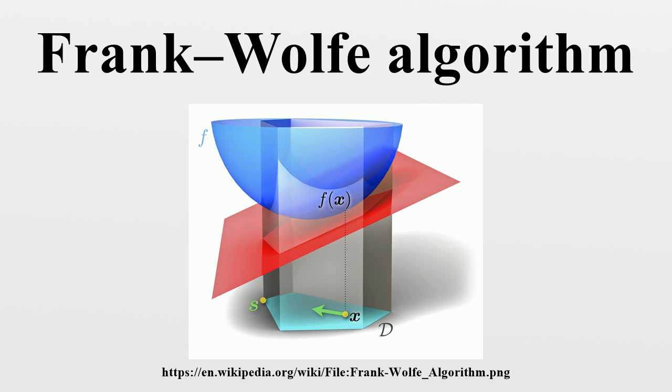The convergence of the Frank-Wolfe algorithm is sublinear in general. The error in the objective function to the optimum is O(1/k) after k iterations, so long as the gradient is Lipschitz continuous with respect to some norm. The same convergence rate can also be shown if the subproblems are only solved approximately.